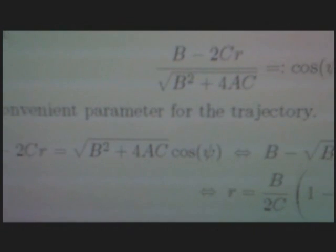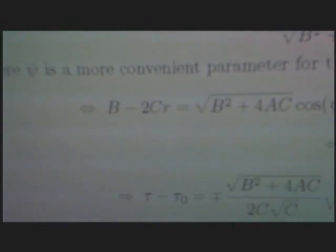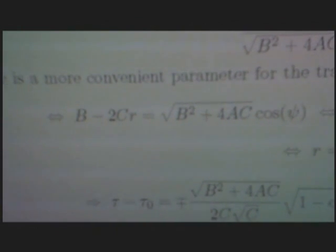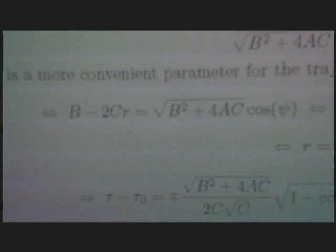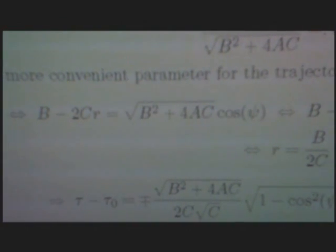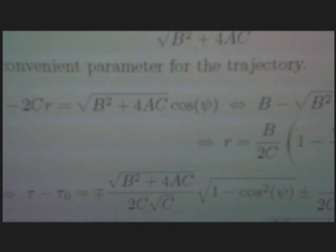Where psi is a more convenient parameter for the trajectory. With this definition we get b minus 2cr is equal to square root of b squared plus 4ac times cosine psi, or equivalently b minus square root of b squared plus 4ac times cosine psi is equal to 2cr, or r is equal to b over 2c times in brackets 1 minus square root of b squared plus 4ac over b times cosine psi.